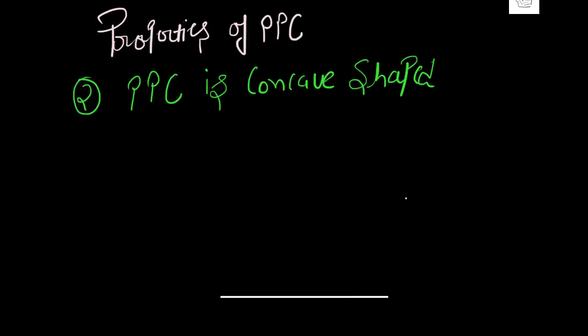Moving on, the second property of the production possibility curve is PPC is concave shaped curve. That is, PPC slope, which we know is MOC, is increasing. And since MOC is increasing, that makes the PPC concave shaped, because had it not been concave shaped, PPC wouldn't look like this. PPC would look much different.